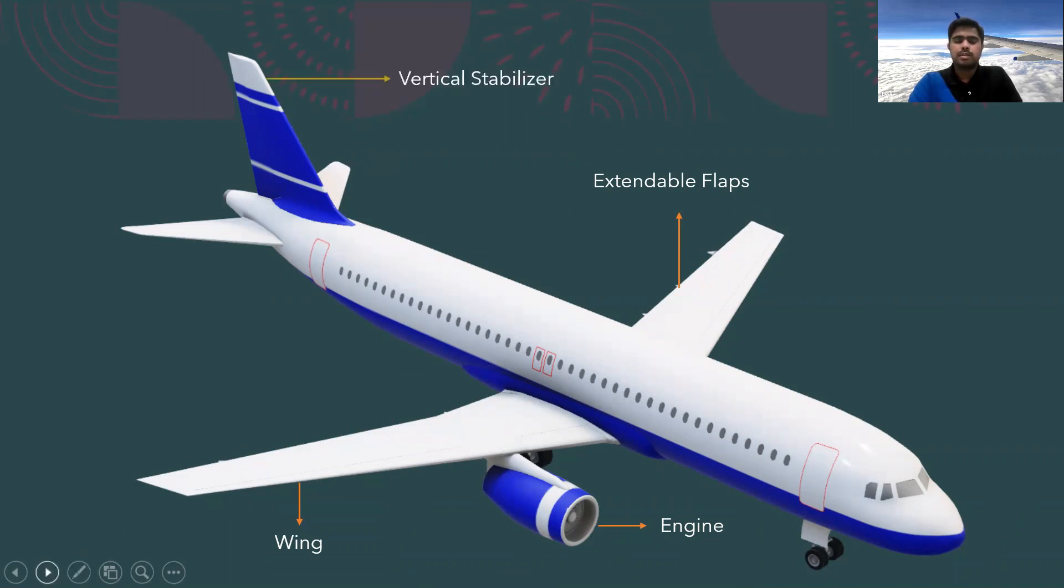This is called the vertical stabilizer. The vertical stabilizer helps to manage the directional stability. The next one is called the rudder. The rudder will help us to handle the yaw motion of an aircraft, that is the rotation about the vertical axis.